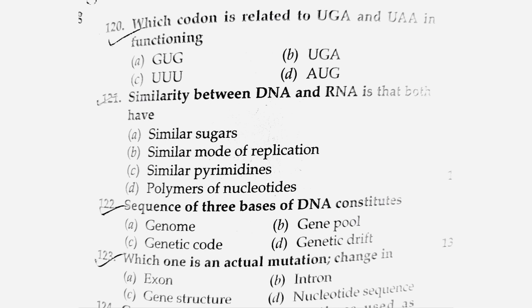Next question: The sequence of three bases of DNA constitutes — genome, gene pool, genetic code, or genetic drift? The sequence of three bases constitutes a genetic code.